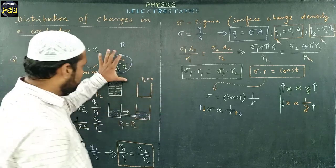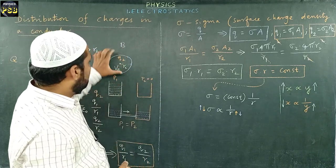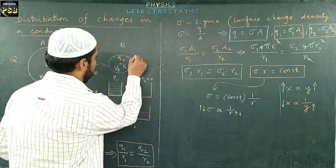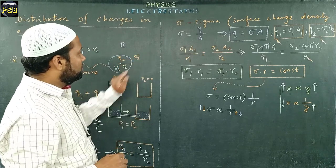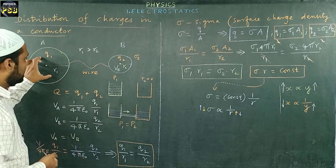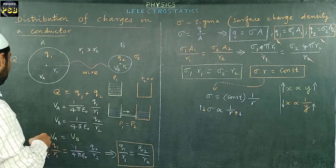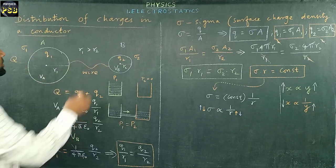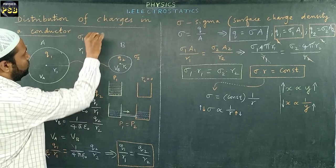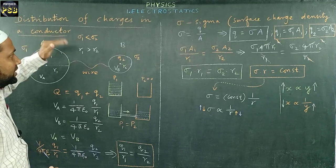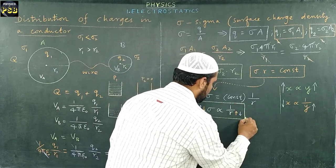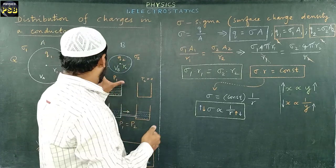It is clear from the diagram: conductor B has a smaller radius, so its surface charge density σ2 is large. Conductor A has a larger radius, so σ1 is less than σ2. When radius increases, surface charge density decreases; when radius decreases, surface charge density increases. So σ1 is less than σ2 since R1 is greater than R2.